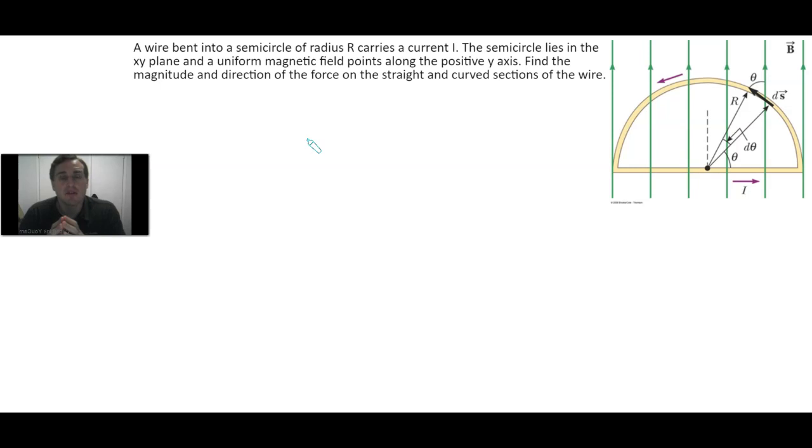The straight piece of wire will be easier to calculate but the semicircle requires some calculus. A wire bent into a semicircle of radius R carries a current I. The semicircle lies in the xy plane and a uniform magnetic field points in the positive y along the positive y axis. Find the magnitude and direction of the force on the straight and curved sections of the wire.